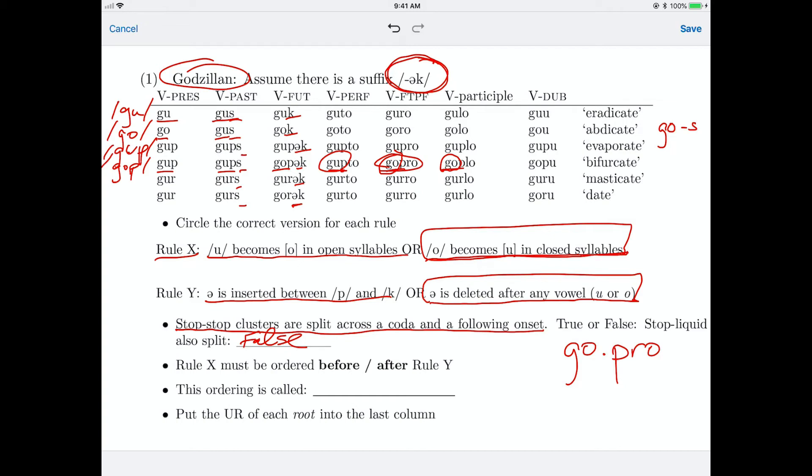And now we have to answer the question about the rule ordering. Does rule x occur before rule y? So we're talking about the version of rule x that we've selected, and the version of rule y that we've selected. Which one happens first? The important form to look at is this form here, because here we have an o in a closed syllable, and it didn't become a u.